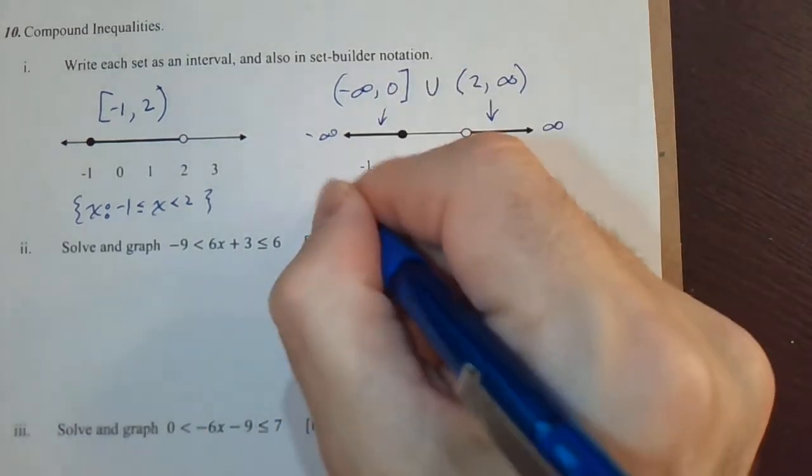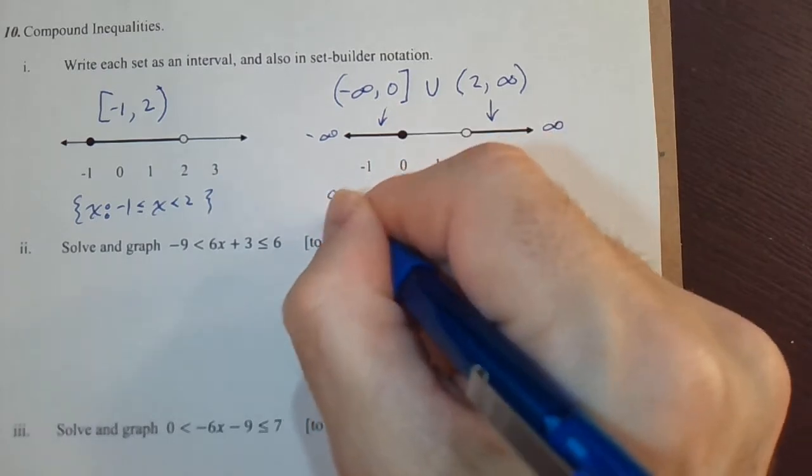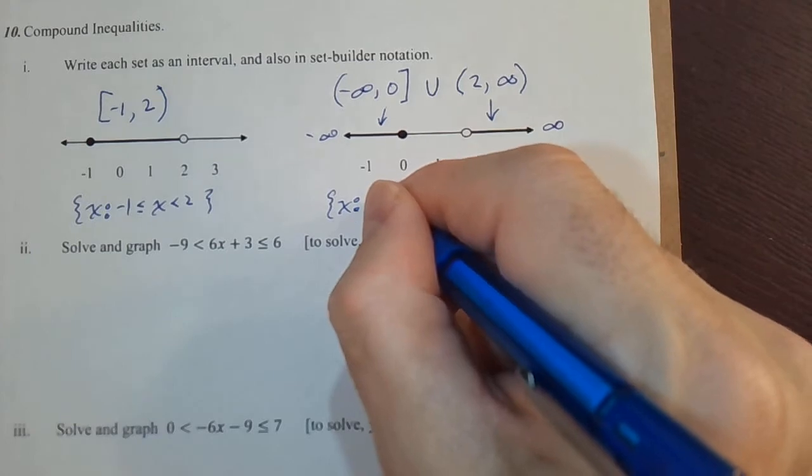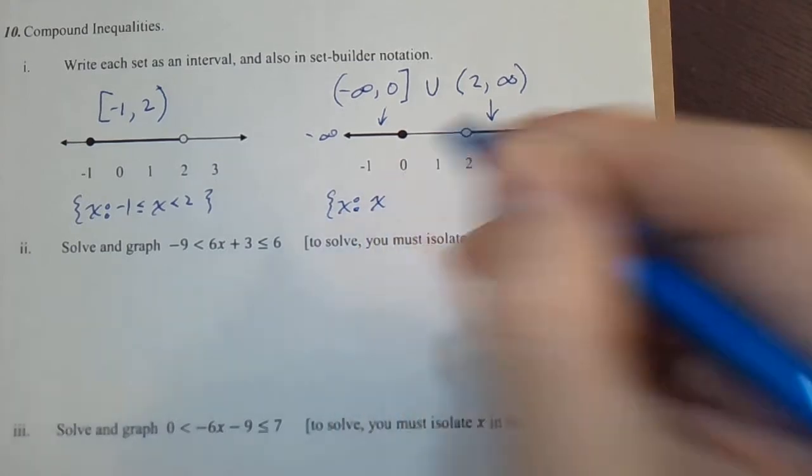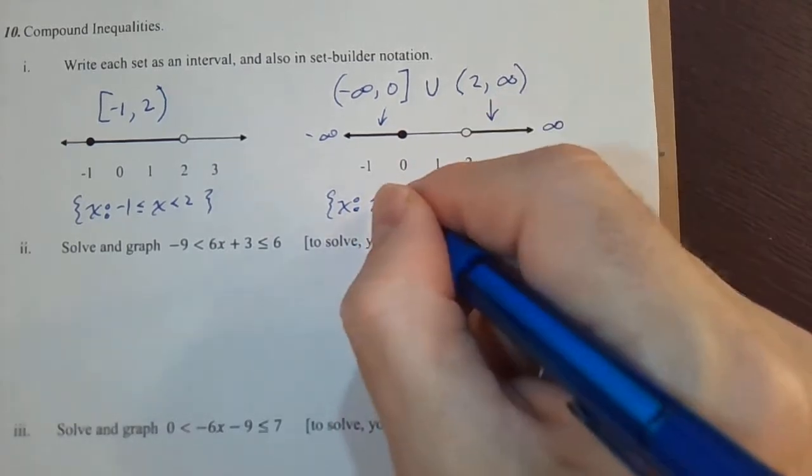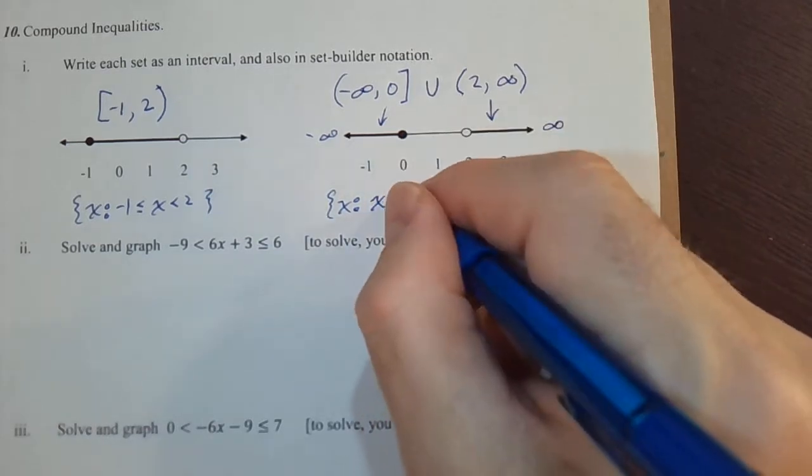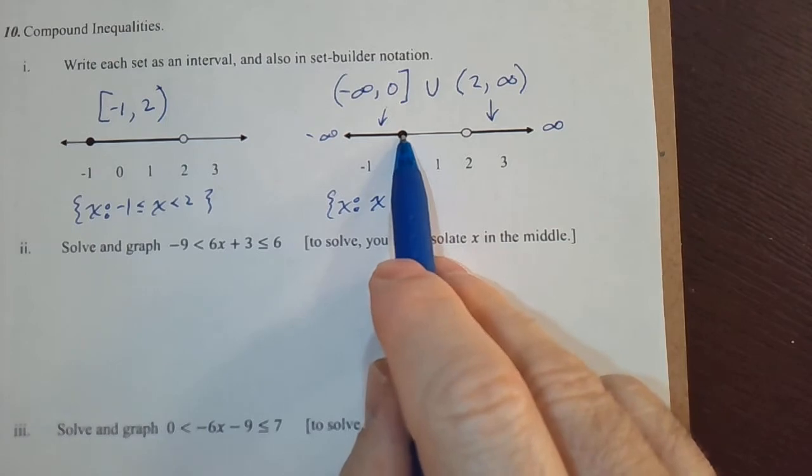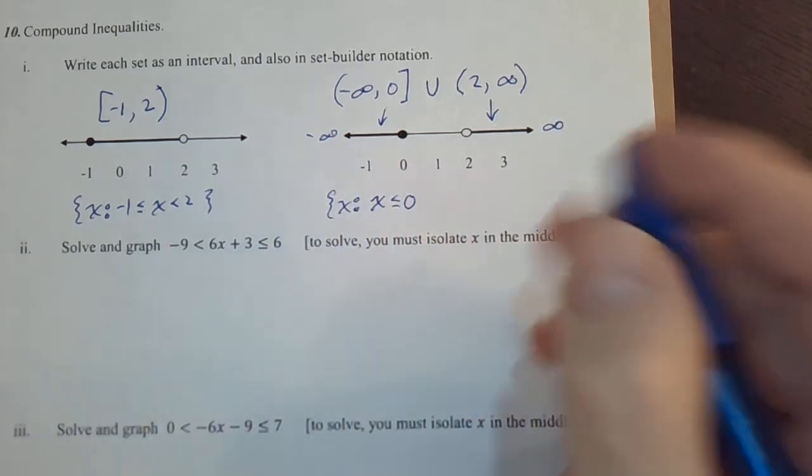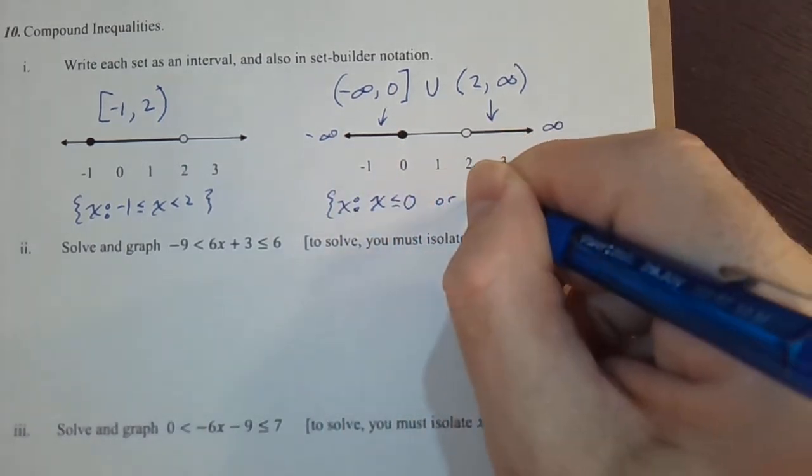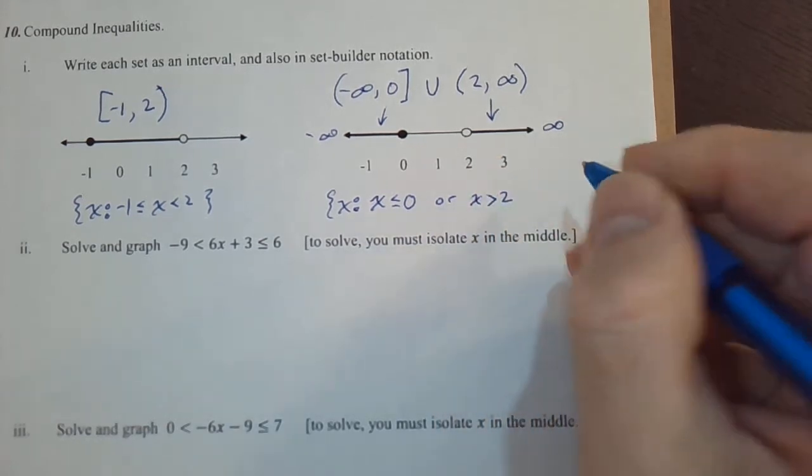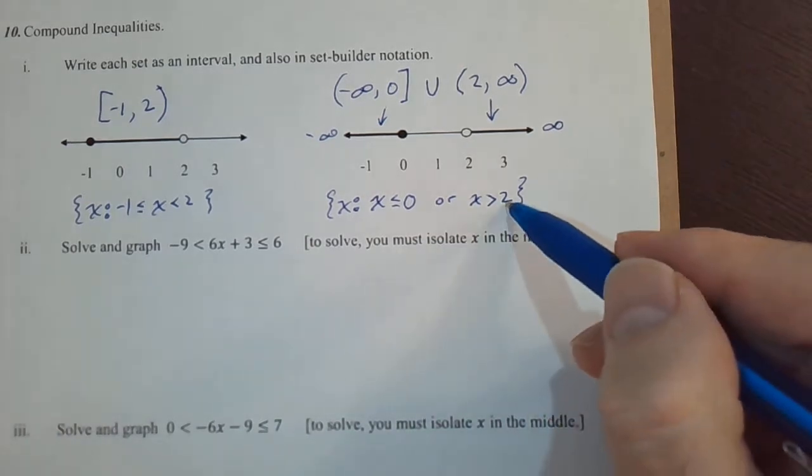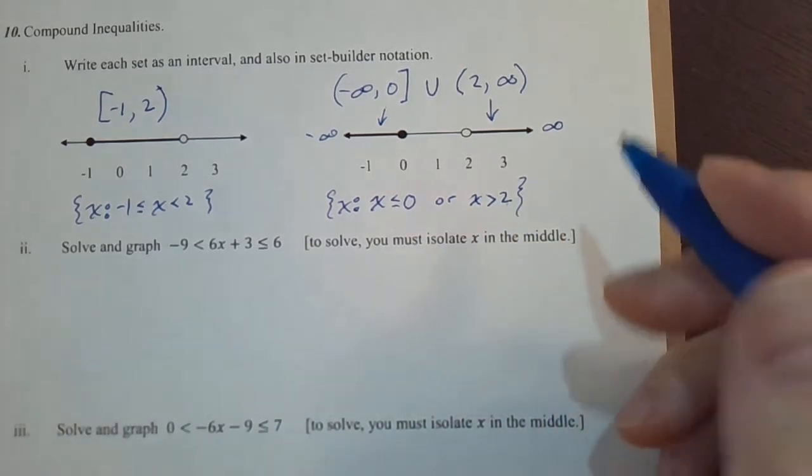And then we could say, that's the set of all x such that x is less than or equal to 0, that's this, or x greater than 2. Not greater than or equal, greater than. This is set builder notation.